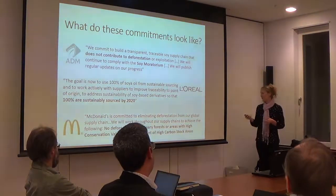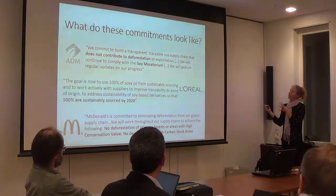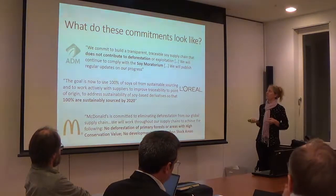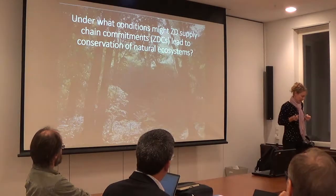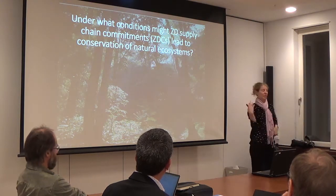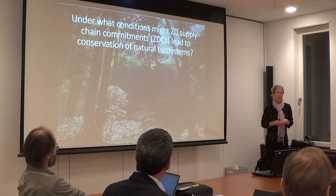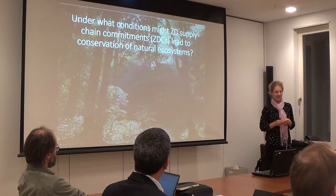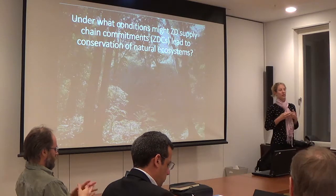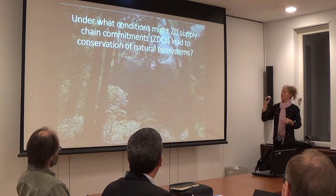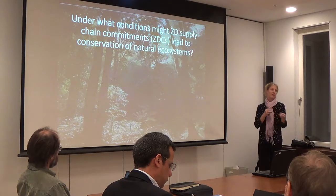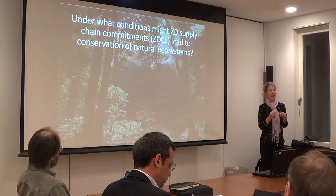We're trying to understand what these commitments look like so that we can implement them and play with them in models under different scenarios. The big overarching question is: under what conditions might these supply chain commitments actually lead to conservation of natural ecosystems? In a modeling framework, we have control — we're not doing empirical work, but rather using empirical information about these actors and commitments, making assumptions about implementation, and then exploring how leakage and spillover effects might happen within that system.